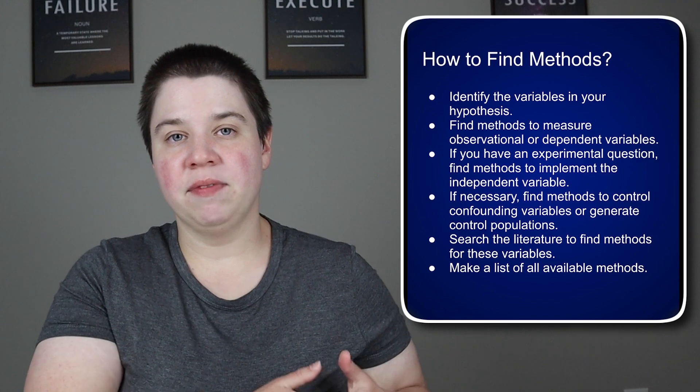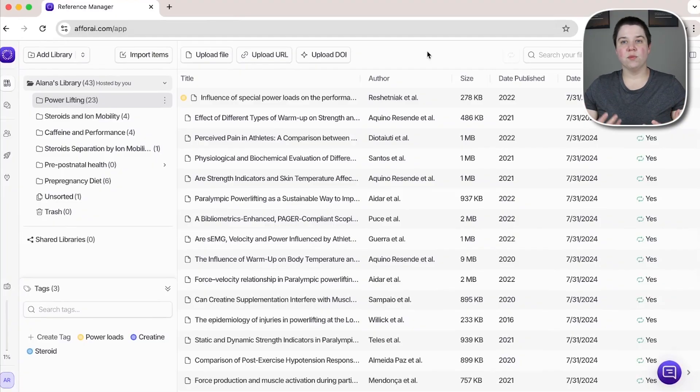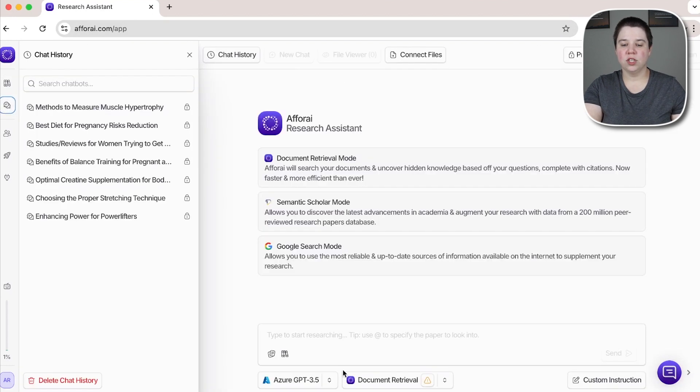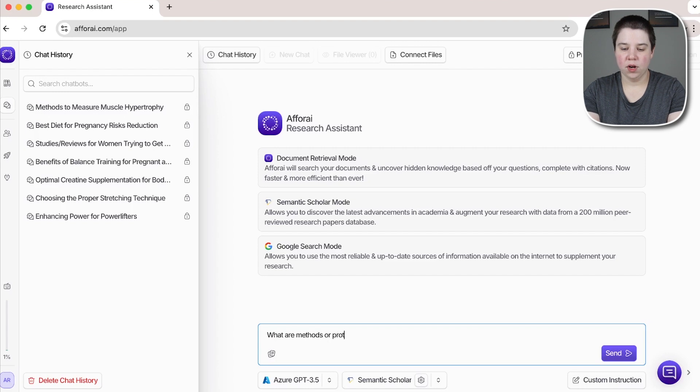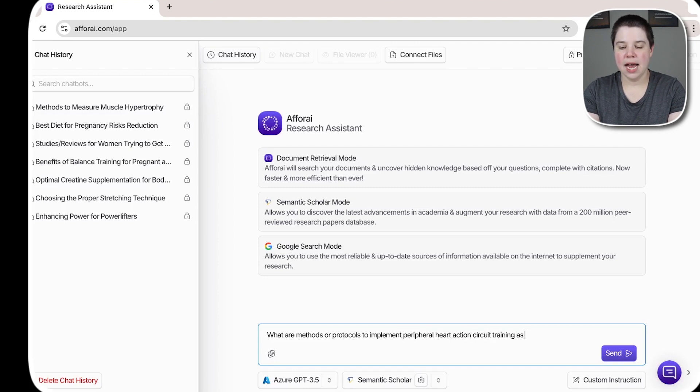I'm going to show you how to do this specifically with a software known as AFRI. So AFRI is a reference manager, but it also has a research assistant built in. And it's been one of the ways that I've been doing a lot of my research lately is using this software. Now this is actually not a sponsored video by AFRI, but I want to show you how you can do this using their software. So if I go to the research assistant, I'm going to go ahead and go into Semantic Scholar mode so that it will pull things from Semantic Scholar. And I'm going to ask it for what are methods or protocols to implement peripheral heart action circuit training as an independent variable in a study. And then I can send.